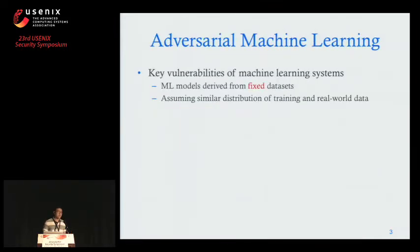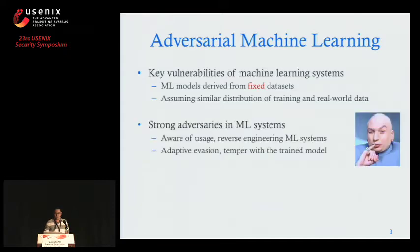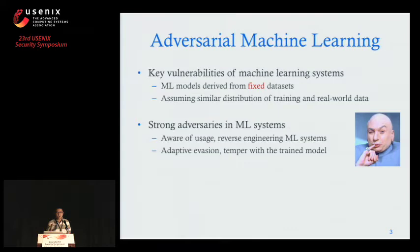Despite its success, machine learning still has weaknesses. The statistical classifier is usually derived from a fixed dataset, and it assumes the same distribution across the training data and the real-world data you're going to deal with later. Because machine learning has become so widely used and almost a standard tool in security defenses, you can expect strong and smart adversaries to become aware of its usage and try to exploit this weakness to protect themselves.